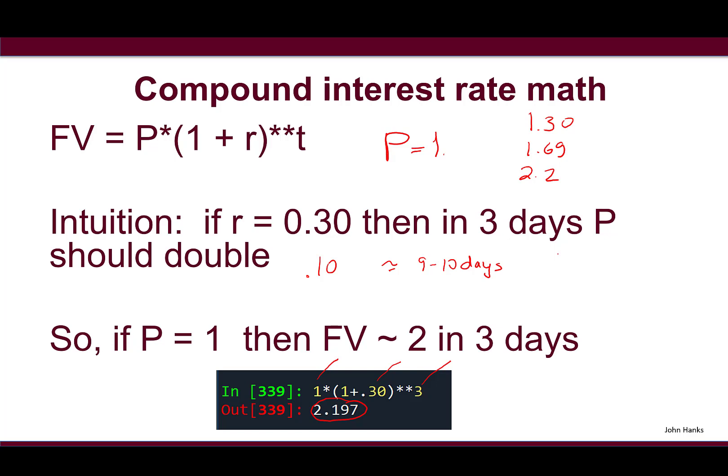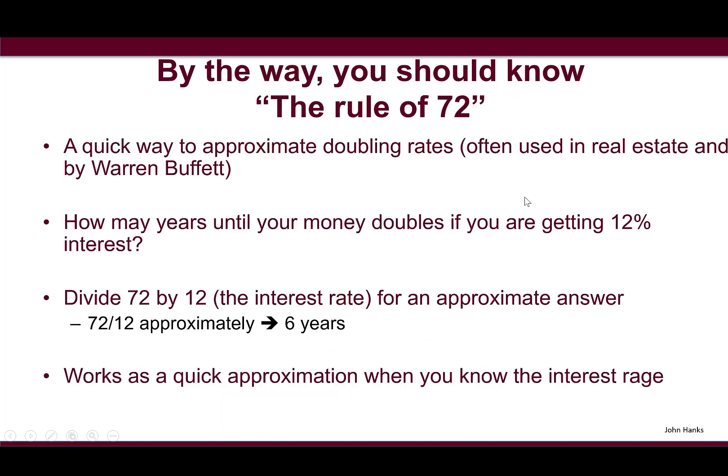I wanted to give you the rule of 72, which is a quick way to calculate doubling rates. This is often done in real estate when you buy a house. You can calculate your mortgage on a monthly basis by using this rule of 72. It's also used by investors like Warren Buffett.